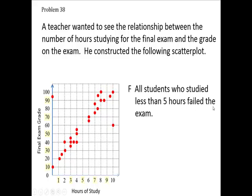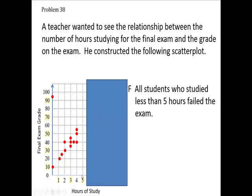Is it true that all students who studied less than five hours failed the exam? Let's block out the students with six, seven, eight, nine, ten hours of studying. These are the students who studied less than five hours. Did every student who studied less than five hours flunk the exam? Well, most of them scored less than 60 — remember the one who had a 10. But look at this guy up here: he didn't study at all and he made a 95. So I can't say everybody failed, because this guy breaks it. Most of them failed, but one scored a 95.